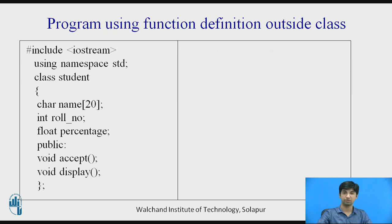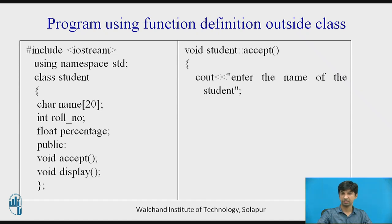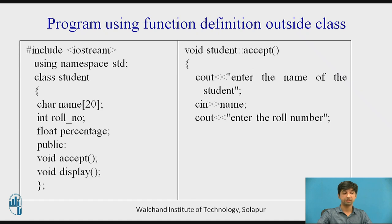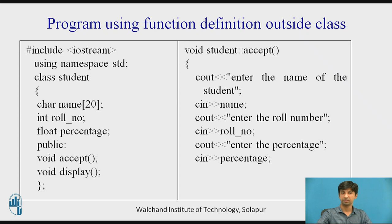Now I define the functions outside the class. To define a function outside the class, I use the scope resolution operator and the class name. So 'void student::accept' — it belongs to the class student. I write the class name, then the scope resolution operator, then the function name accept. Then cout with insertion operator displays 'Enter the name of the student', and 'cin >> name' reads input. Then 'Enter the roll number' is displayed and 'cin >> roll_number' reads it. Then cout displays 'Enter the percentage', and cin reads the percentage value through the keyboard. Then I end the function definition.